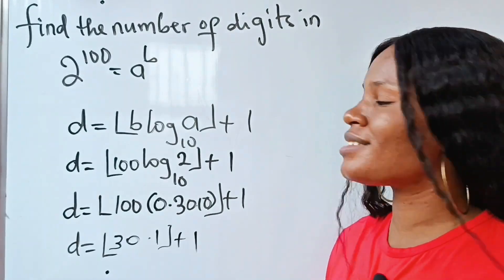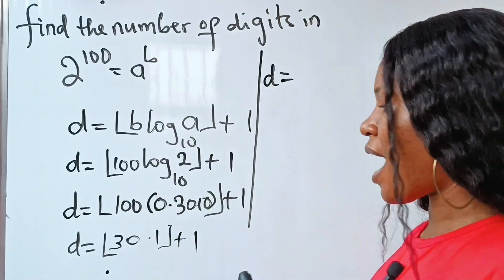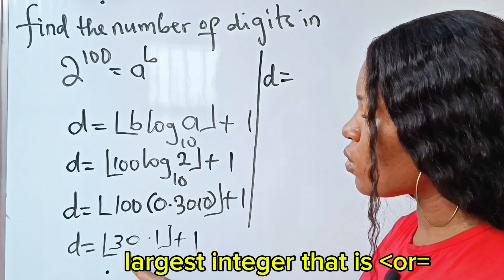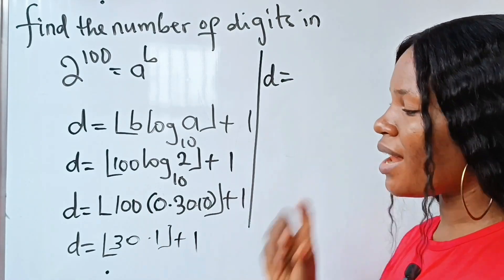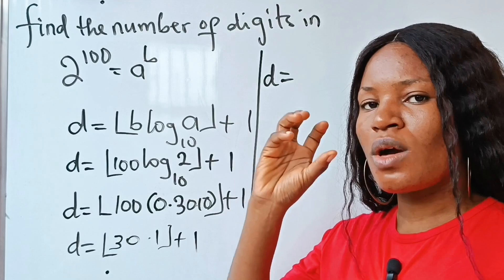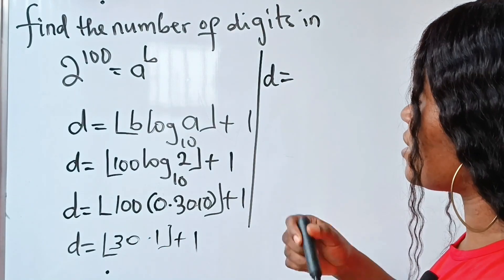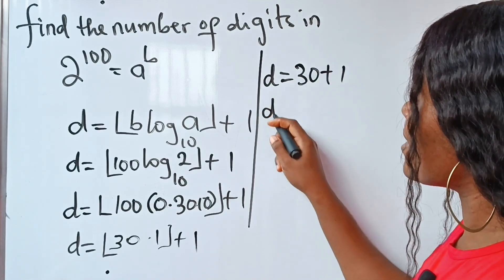Perfect, you can see how easy it is. Now what is the floor of 30.1? It is an integer that is less than or equal to 30.1, and the answer here is 30. So it's going to be 30 plus 1. You can see that we have gotten 31 digits. Isn't that amazing?